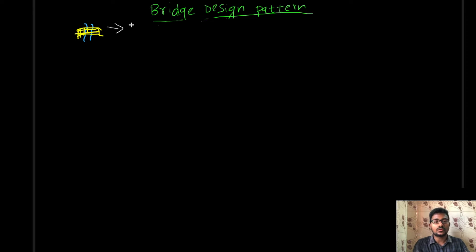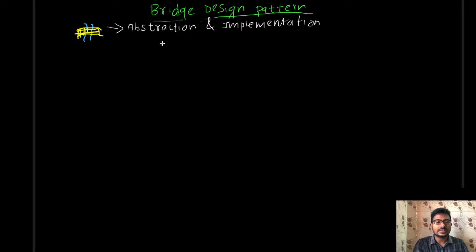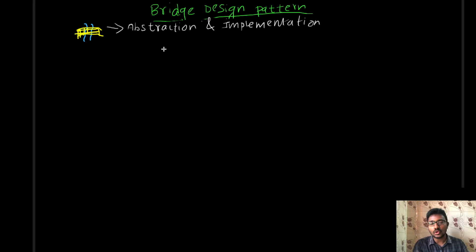Similarly, in software there are two layers: abstraction and implementation. What is abstraction? If you are using any software APIs — for example, Java collections like Map, List, or LinkedList — you don't need to know the inner implementation details. You can just call methods like dot add, dot put, etc., and the implementation is taken care of by the Java community. This is called abstraction.